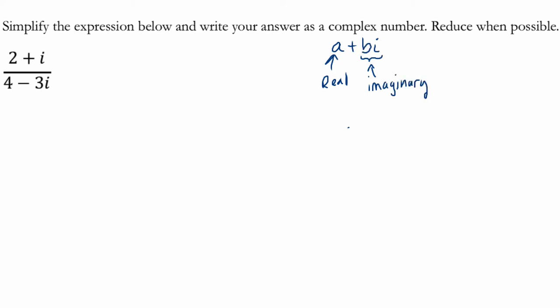So we have these two components that make our complex number. So we're trying to get an answer that looks like this. And in this problem right here, I see the 4 minus 3I in the denominator. So I'm going to multiply by the conjugate, which is the same complex number,